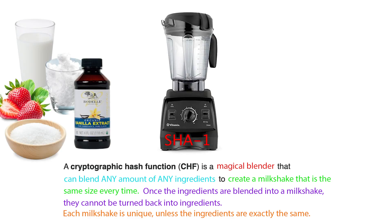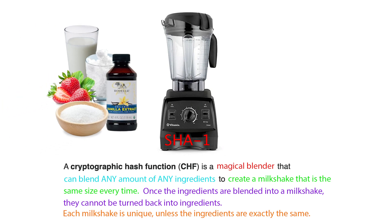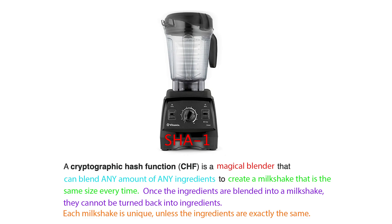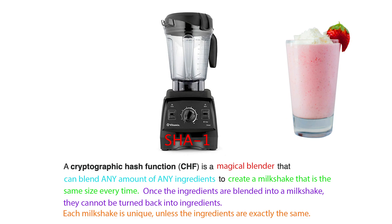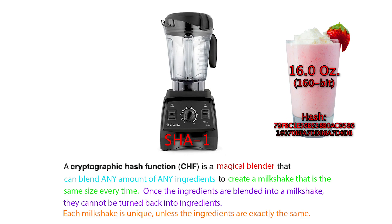A cryptographic hashing function is really just a magical blender. This magical blender can blend any amount of any kind of ingredient you can imagine. And once these ingredients have been blended, no matter how much you put in or how little, a milkshake is created that's the same size every single time. And once the ingredients have been blended into a milkshake, there's no way to turn them back into ingredients — just like in real life, if you blend strawberries, ice, vanilla, and sugar, you can't turn that milkshake back into strawberries.